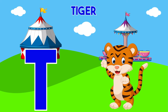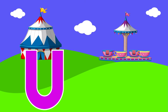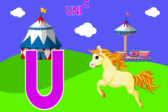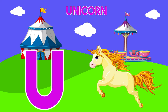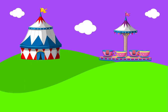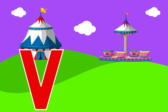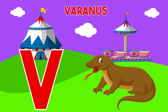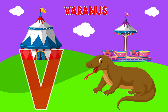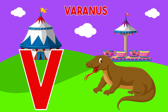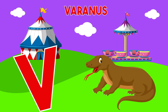Tiger. U is for Unicorn. U, Unicorn. U, Unicorn. V is for Varanus. V, V, Varanus. V, Varanus.